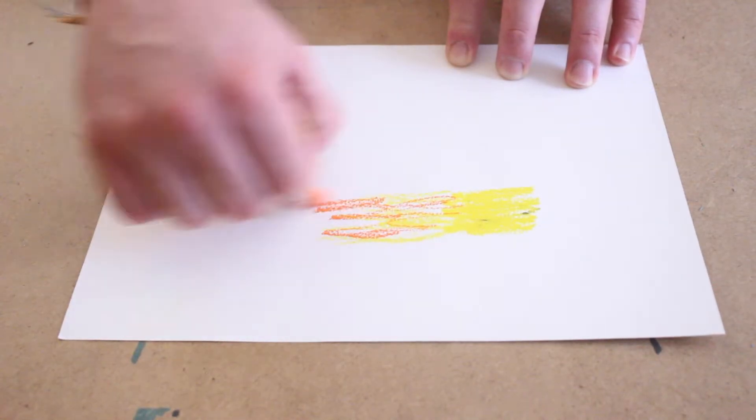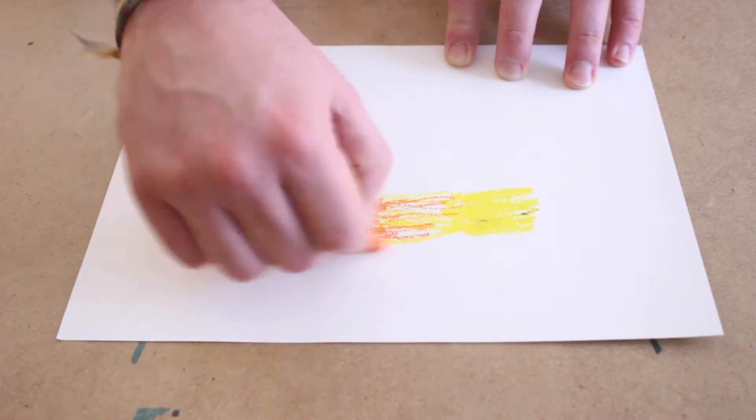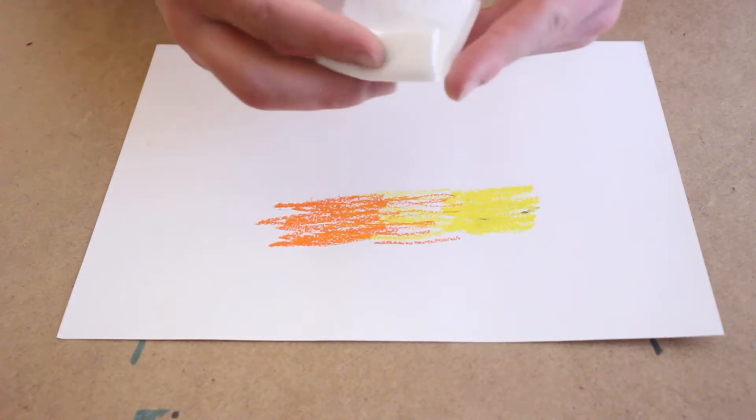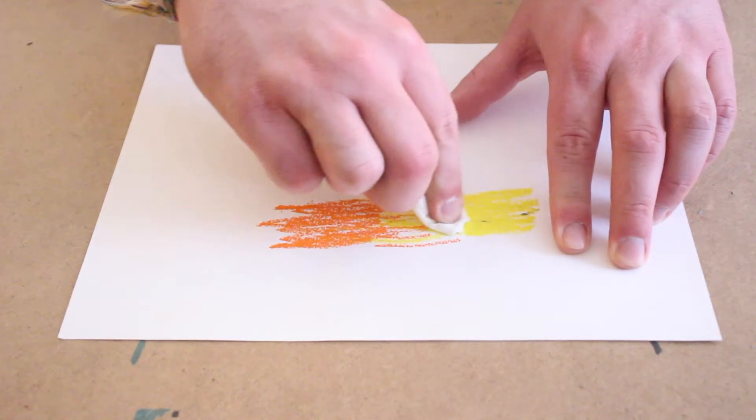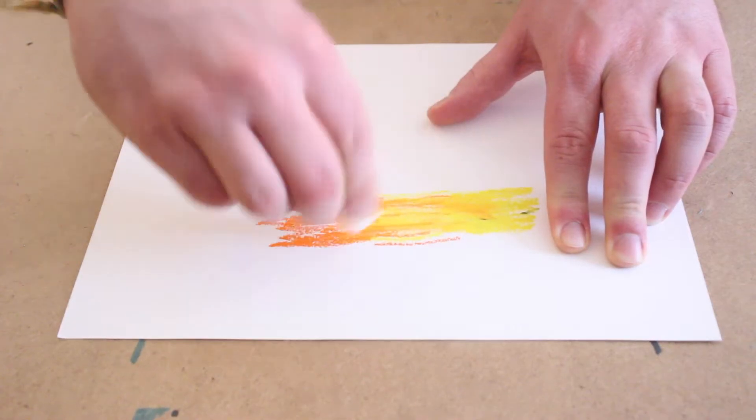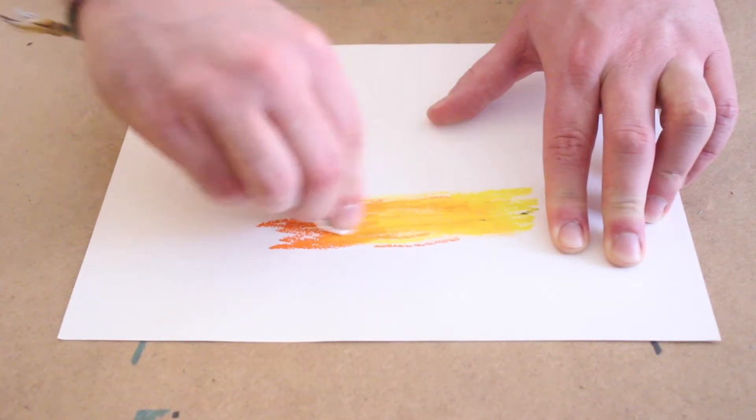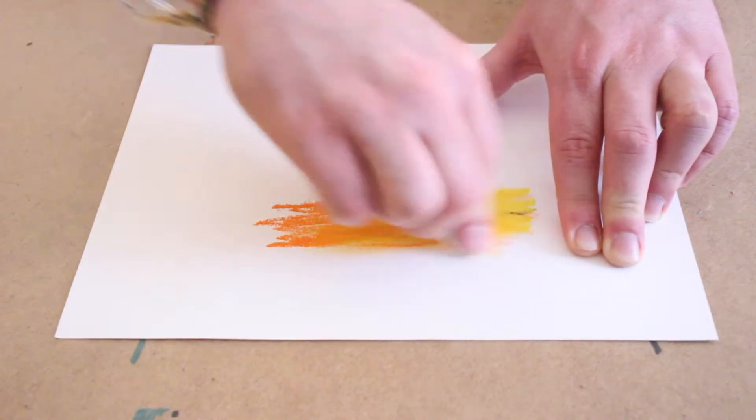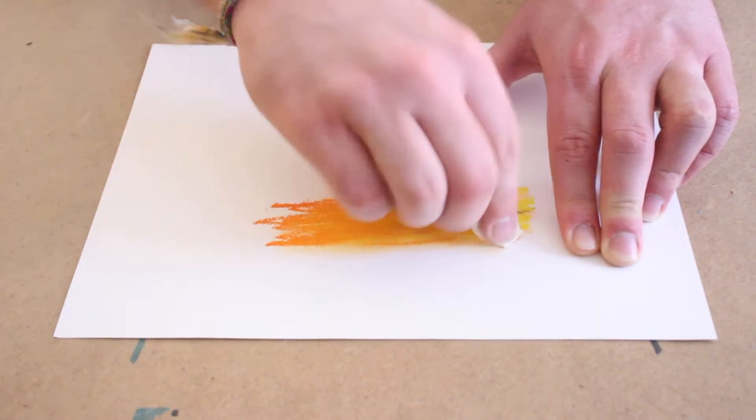With the oil pastels, remember we really want to focus on layering and adding the colors on top of each other. When blending, I recommend always taking the lighter of the colors and blending that color into the darker colors. You have a lot more control that way compared to grabbing the darker color and pulling it and blending it into the lighter color.